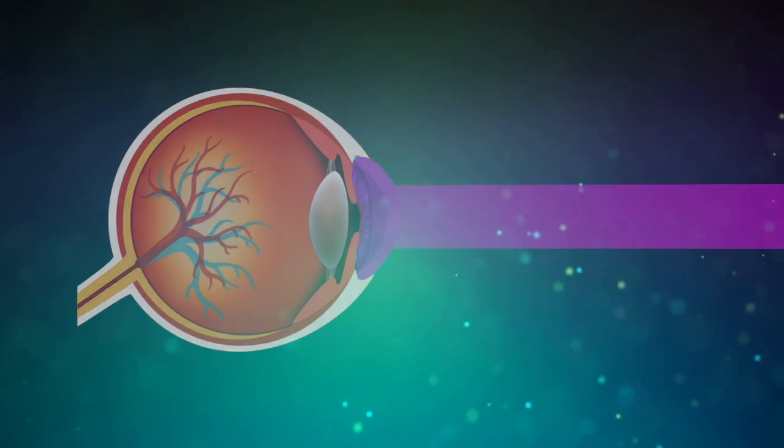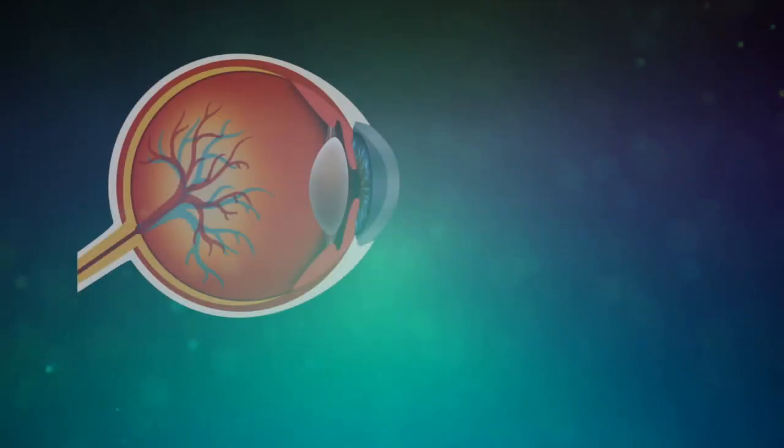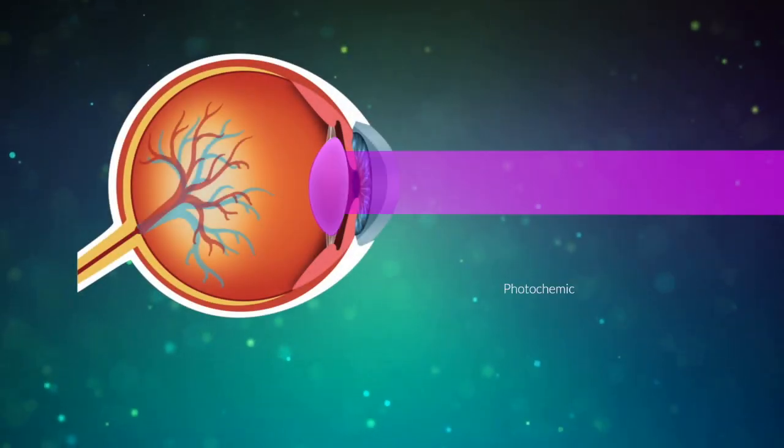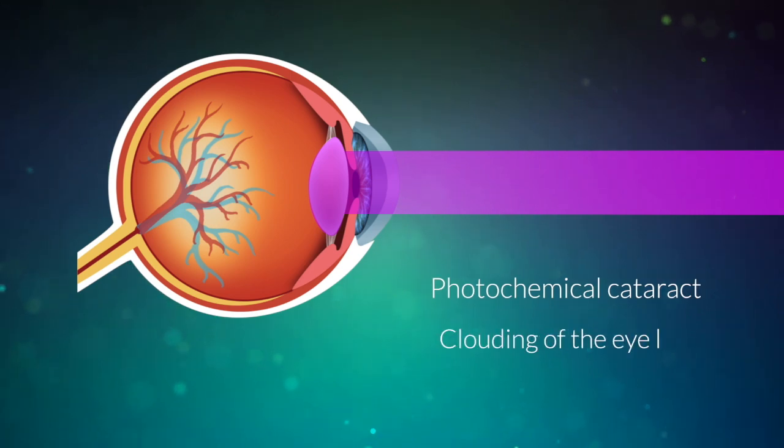Light in the near ultraviolet wavelength region, spanning approximately 315 to 400 nm, will be absorbed by the lens in the eye and can cause photochemical cataract or clouding of the eye lens.